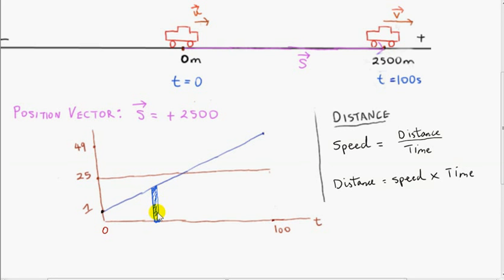So it makes sense to use areas to get the distance travelled by an object. For the entire journey, we could imagine dividing the region underneath the blue line up into infinitely many thin rectangles and just summing the areas of all those rectangles — that gives us the total area under the blue line. So as I said, the area under a velocity-time graph gives us the distance travelled.